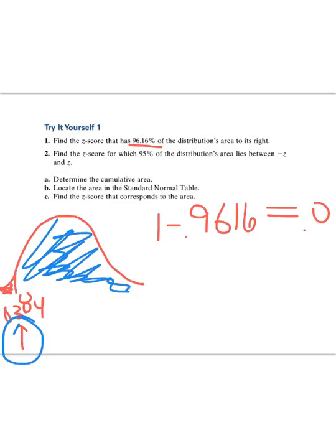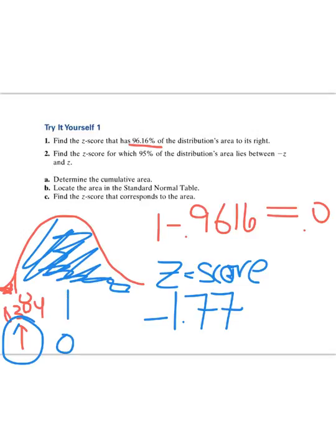I'm going to do second distribution, inverse norm, and put 0.0384, 0, 1. And I'm going to get negative 1.77 for my z-score. That's my z-score, which makes sense to me because if this is 0 in the center, and I'm trying to capture all of this area right here, having a z-score to the left will make sense to me.